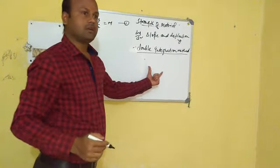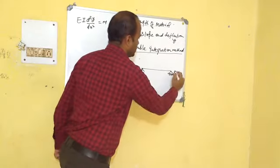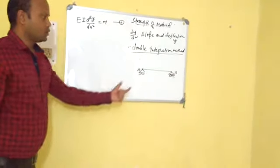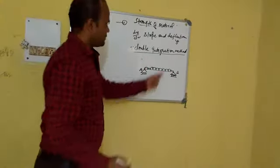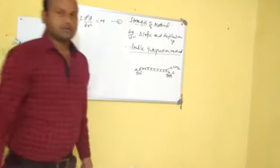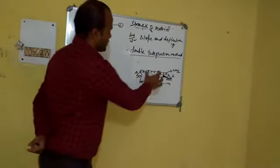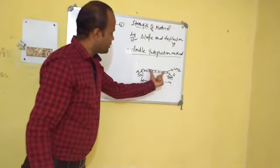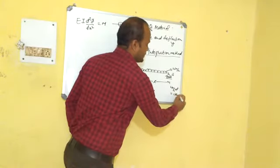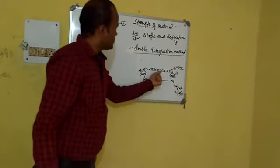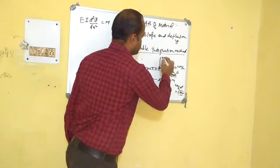Here I am going to take an example of a simply supported beam, supported at points A and B. On this beam I am taking a uniformly distributed load of W Newton per meter. The span of this beam is L. The total load is W Newton per meter into L, which equals WL Newton, located at the center of gravity of the beam, i.e., at L/2.